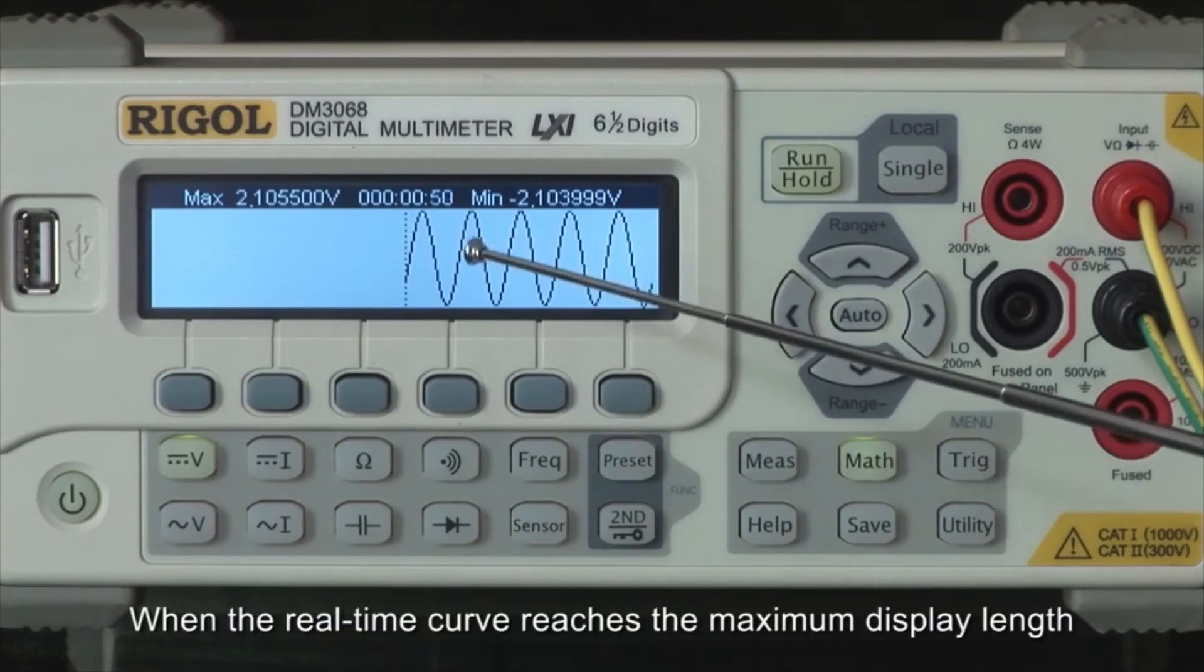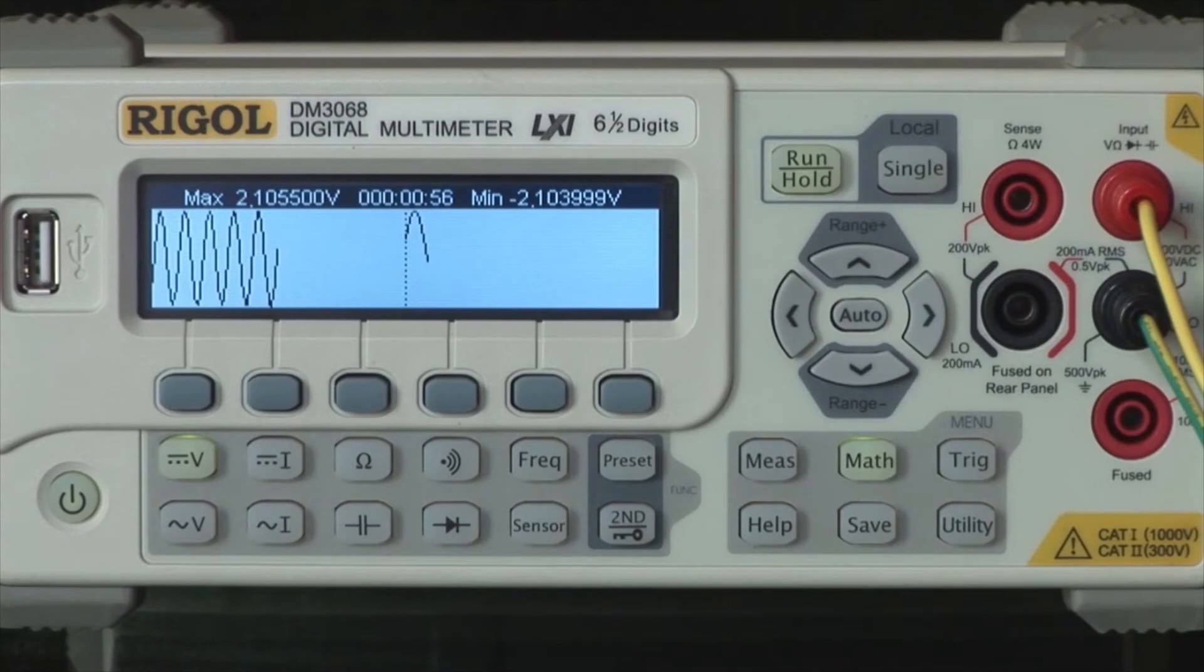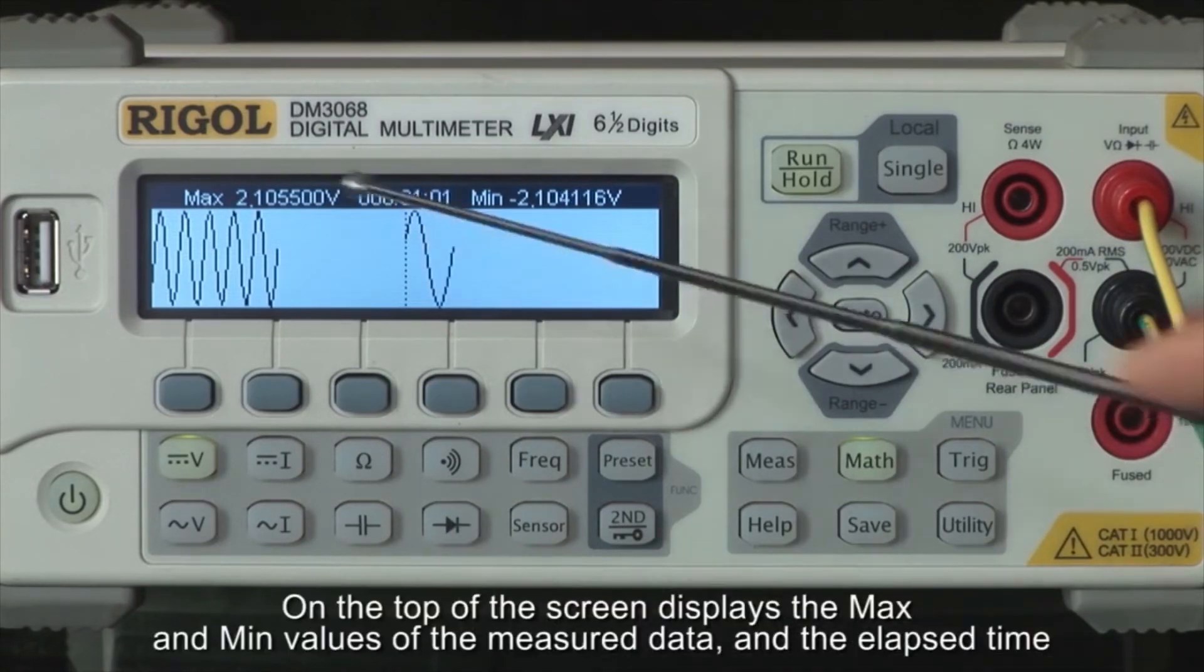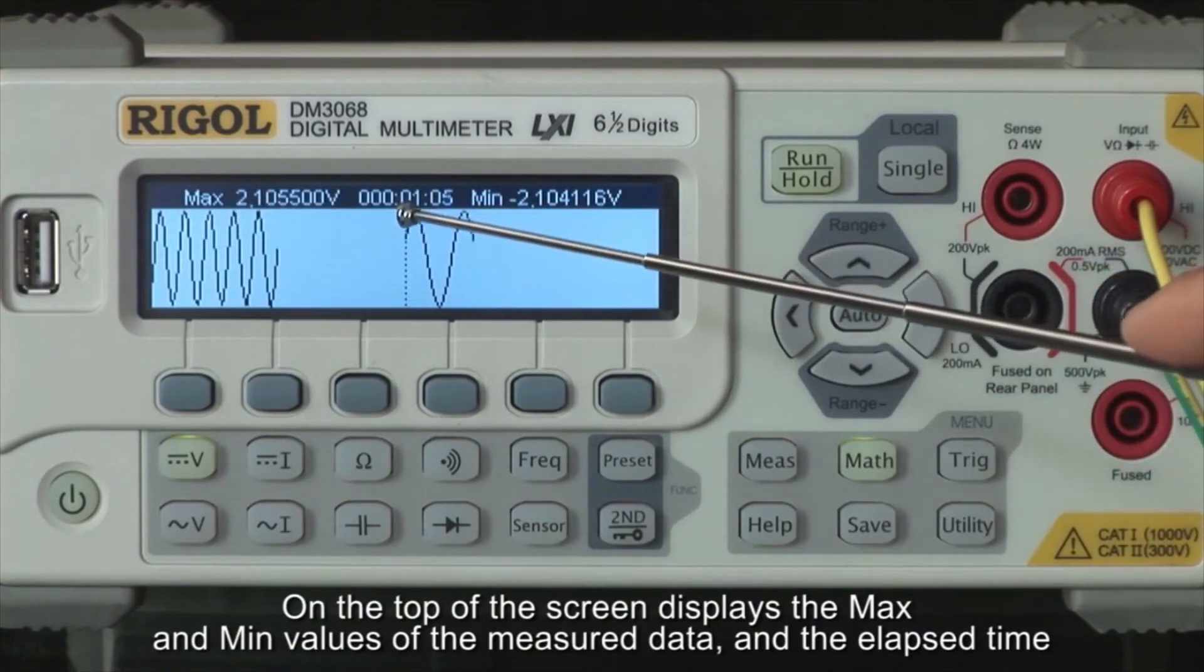When the real-time curve reaches the maximum display length, it will be compressed and added to the trend graph displayed on the left side of the screen. On the top of the display, you can see the max and min values of the measured data and the elapsed time.